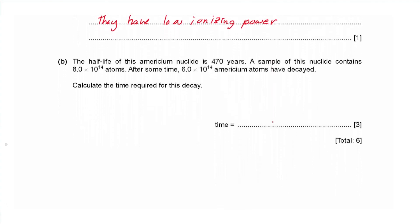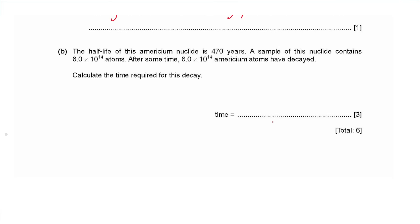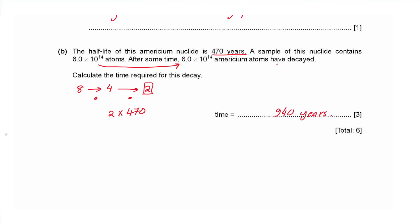Part b: the half-life of americium is 470 years. A sample contains 8.0 × 10¹⁴ atoms; 6.0 × 10¹⁴ have decayed, leaving 2.0 × 10¹⁴ undecayed atoms. From 8.0 × 10¹⁴ we divide by 2 to get 4.0 × 10¹⁴, then divide by 2 again to reach 2.0 × 10¹⁴ — two half-lives have passed. Two half-lives × 470 years = 940 years.